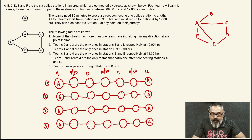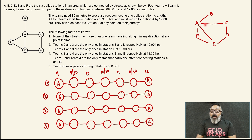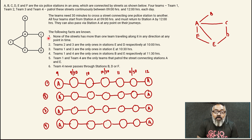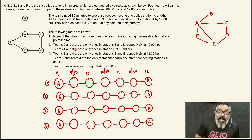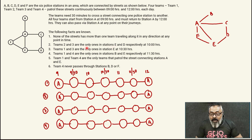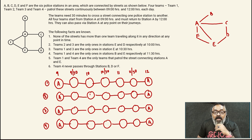None of the streets has more than one team travelling along it in any direction at any point in time. So if one team is travelling from A to C, they're the only one allowed there. The four teams pick any of these four lines — at a given point in time there will be no overlap. Then the clue says team 2 and team 3 are the only ones at stations E and D respectively at 10 hours. We must capture this information correctly — reading '2' and writing '1' can create a lot of problems.